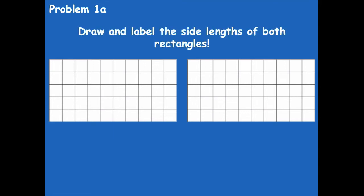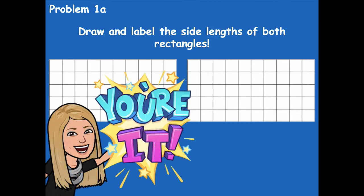I want you to draw and label the side lengths of both of your rectangles — that's problem 1A on your problem set. You don't need to draw in the grid lines, just draw the rectangles and count the squares on each side to find the side lengths, then label them on your drawing on problem 1A. Pause the video, do that, and then click play when you're ready for the next step.